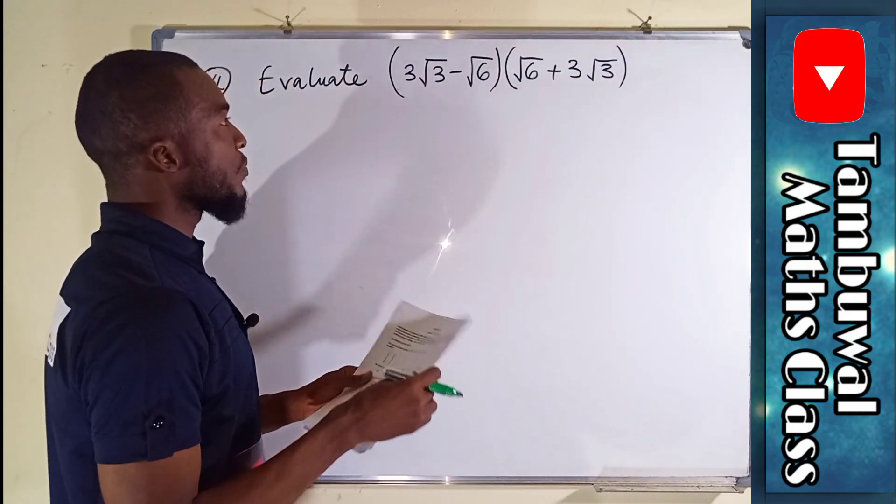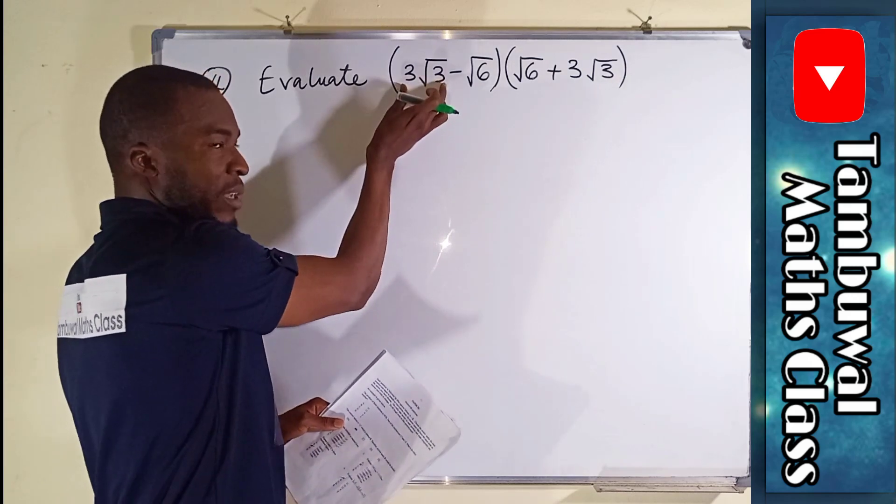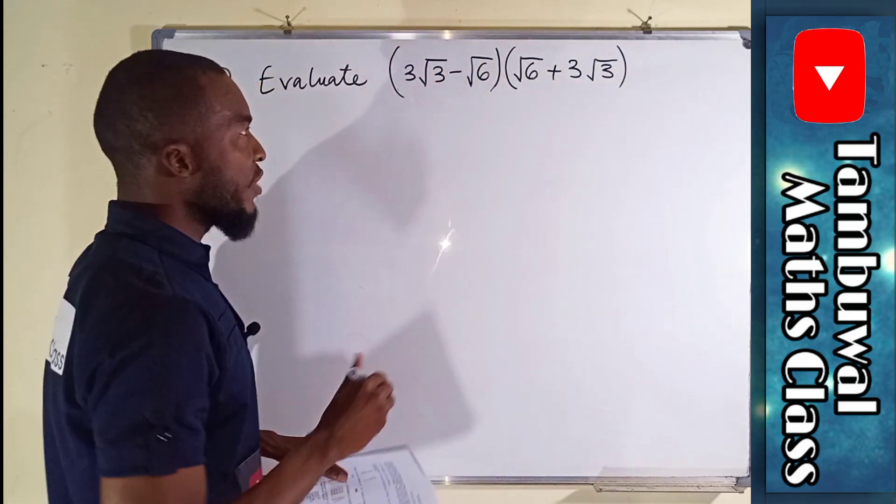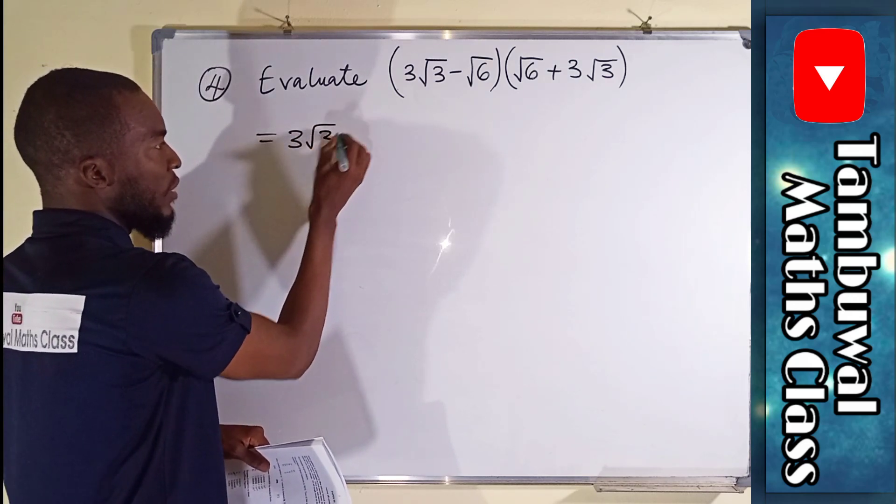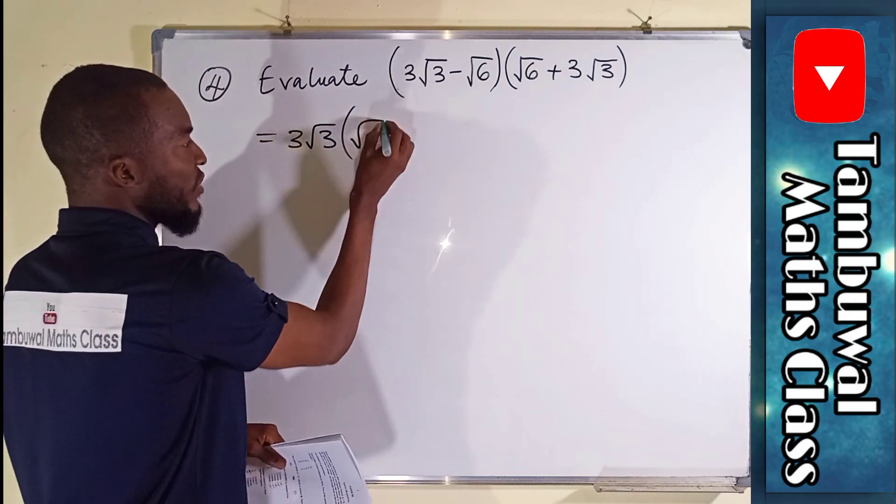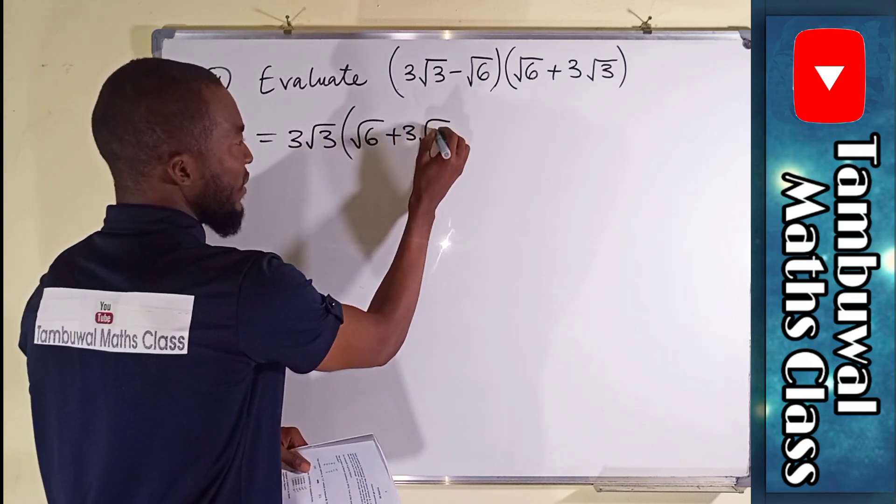What we are going to do is take the first term here and multiply it through the bracket to the right. So we have 3√3 multiplied by the whole of (√6 + 3√3).